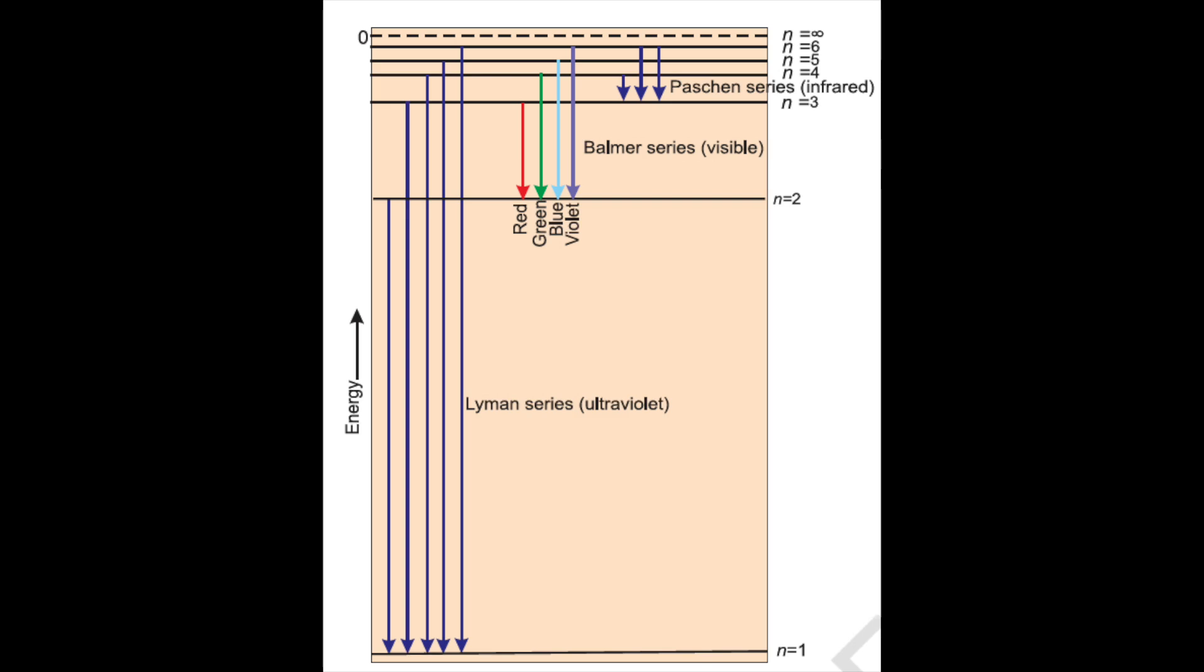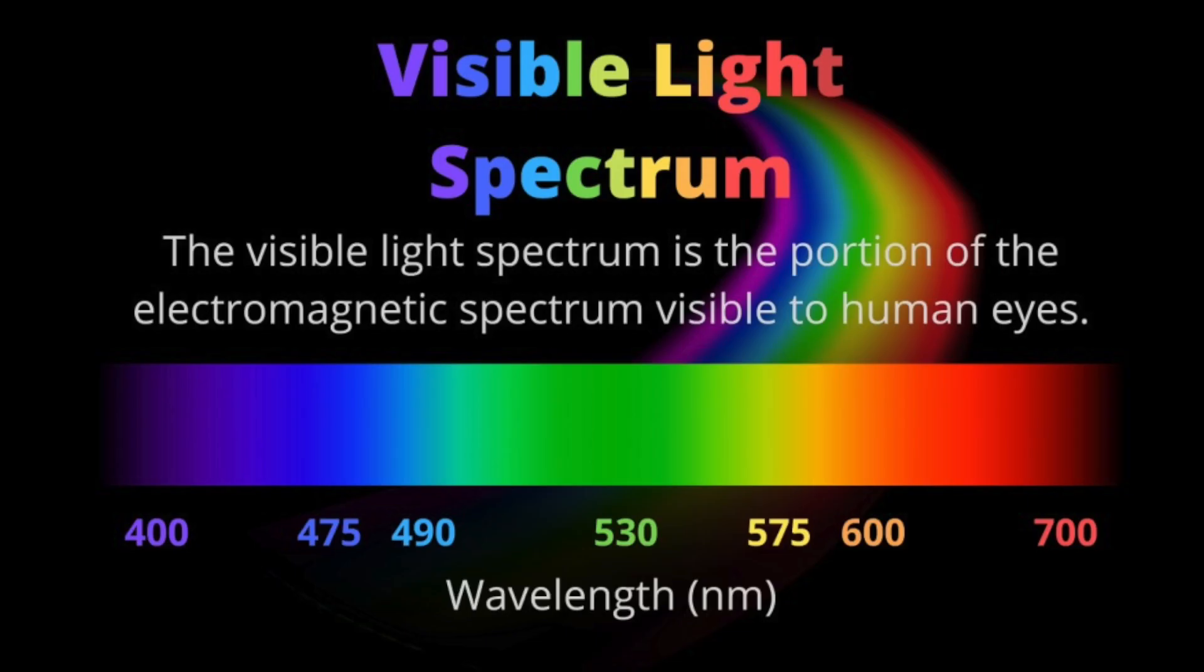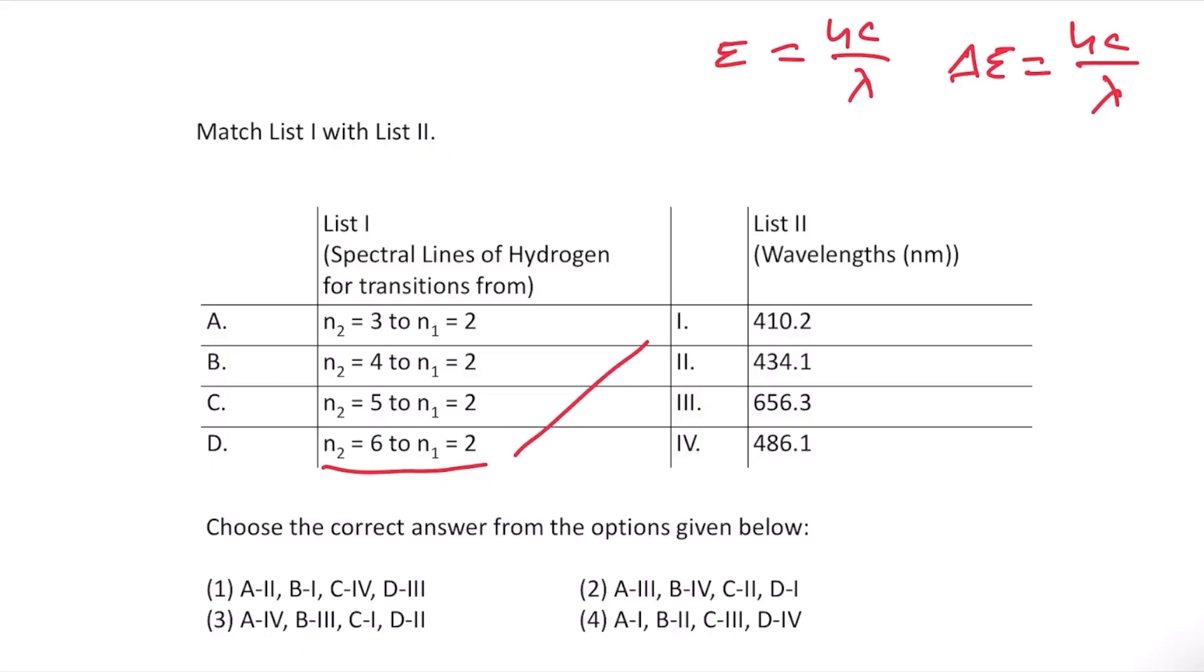This means D matches with I. Then the second largest energy gap will be n2 equals 5 to n1 equals 2, and that will be matching with II.